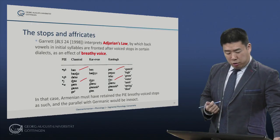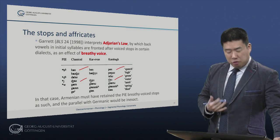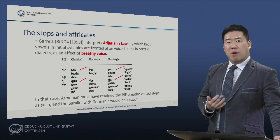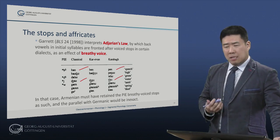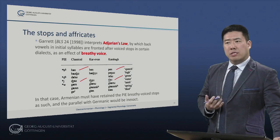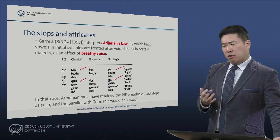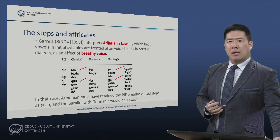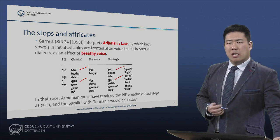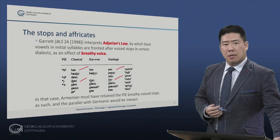Garrett argues on general phonetic grounds that this could have been caused by breathy voice. In other words, that the voiced stops were actually breathy voiced, often called voiced aspirated: B, D, G, and Z.